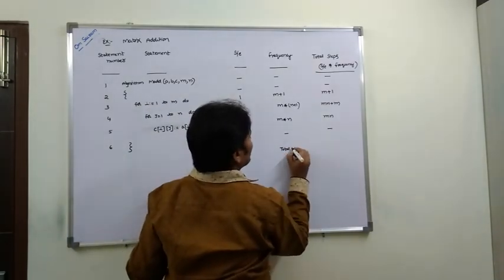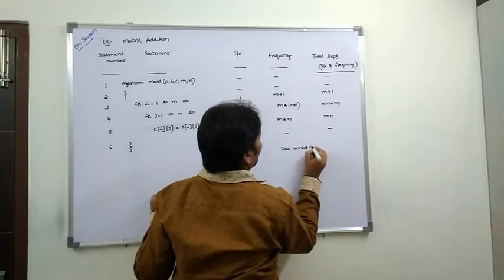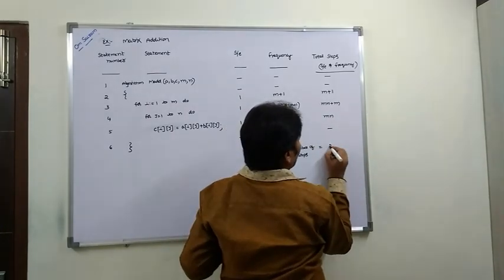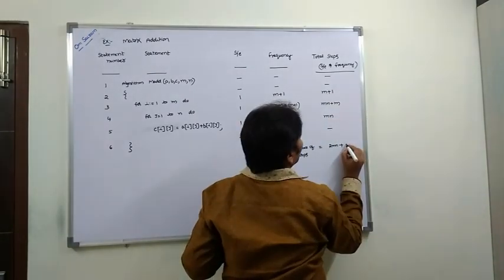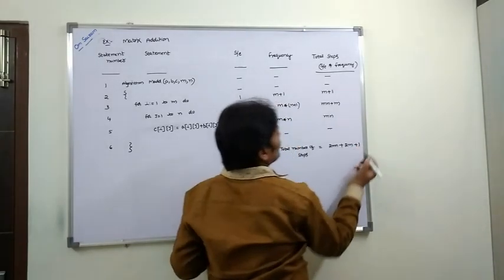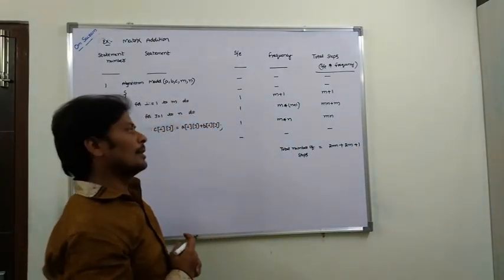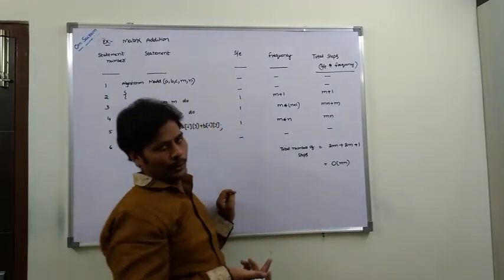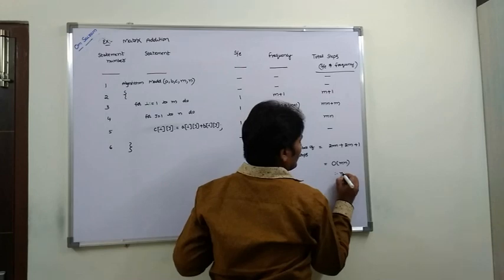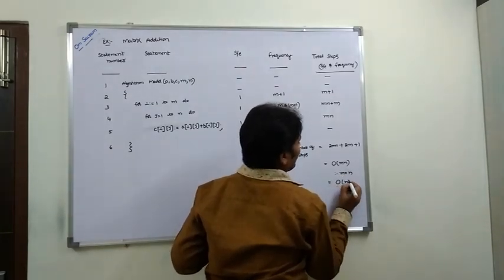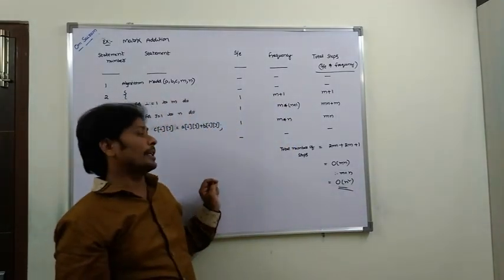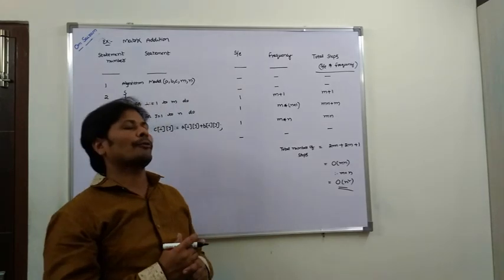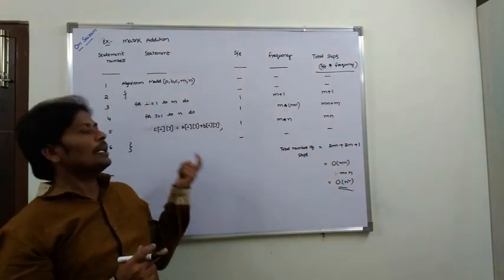Therefore, total number of steps = MN + MN + M + M + 1 = 2MN + 2M + 1. According to this, the time complexity is O(MN). When M = N, that becomes O(N²). So the time complexity of matrix addition is O(N²), and this is how we find the time complexity of an algorithm using the step count method.